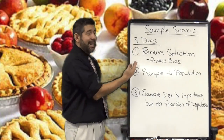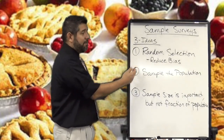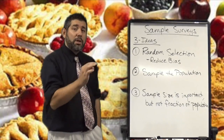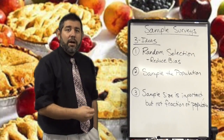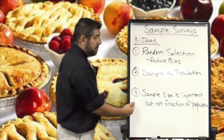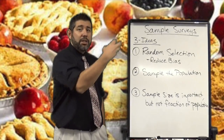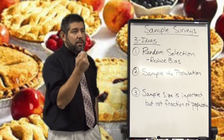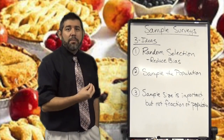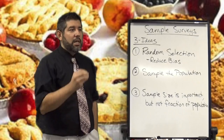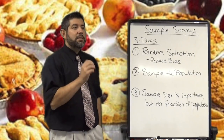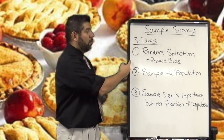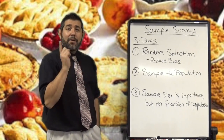Wrapping up: there are three ideas to taking a good sample survey. One — you have to have random selection, which reduces bias. Two — you have to sample the population with a good sample that is representative of the population. Three — the sample size is important, but not the fraction of the population. A small sample, if it's a good representation, is going to be good enough for the entire population. If we take a good enough representative sample, we can make conclusions about the entire population regardless of how big that population is. I'm going to go have some pie now — see you later, bye!